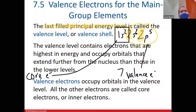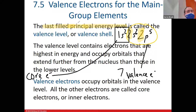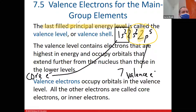Core electrons really don't have a whole lot to do in the atom. They are primarily there to keep the atom balanced in charge and to stabilize it, but when it comes to chemical bonding they have very little to do — they are too well protected from other atoms to participate in any kind of bonding. So it is the valence electrons that are the primary focus of our discussion.